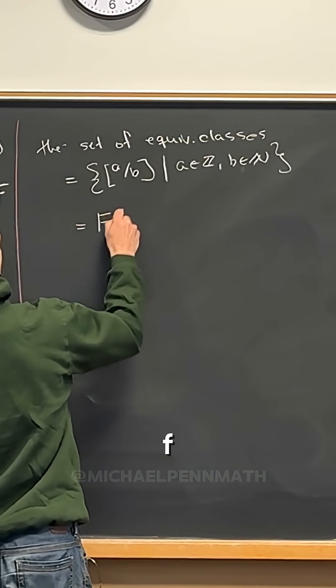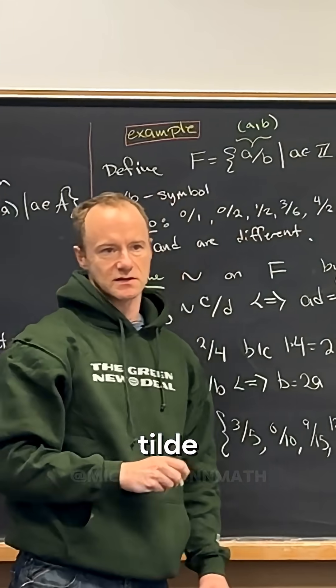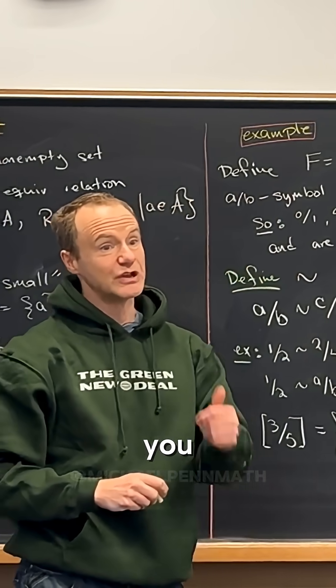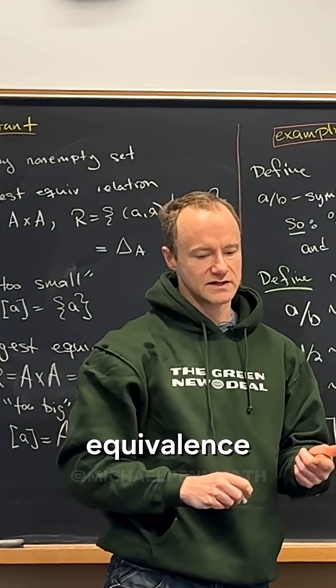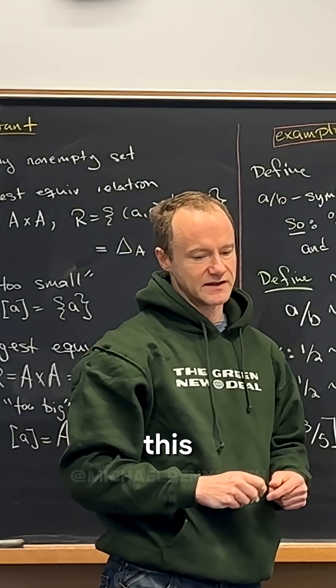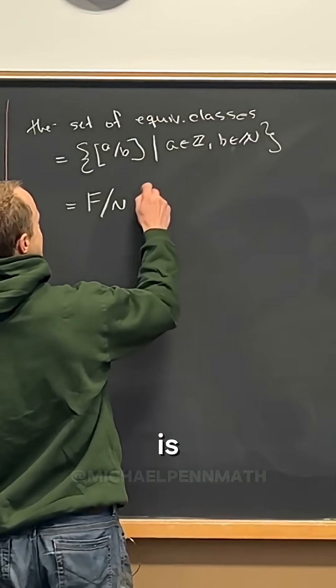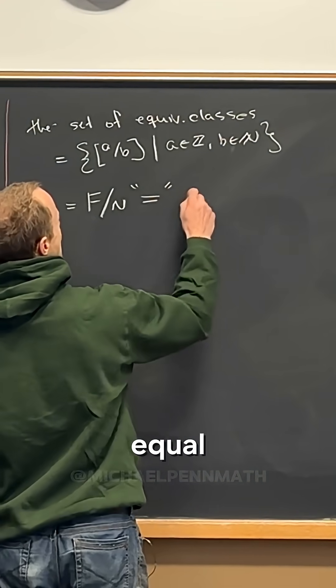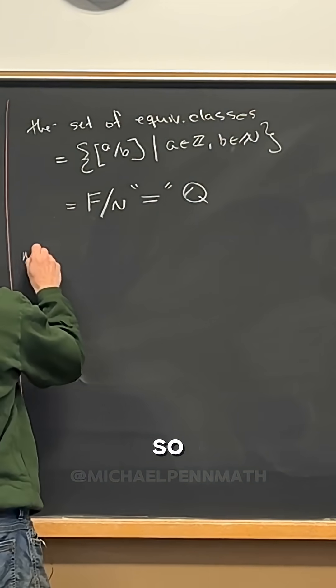This is equal to F slash tilde. Often when you've got an equivalence relation and you're looking at the set of equivalence classes, you write it out like this and you read that as F mod tilde. So this is equal to the rational numbers.